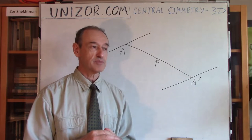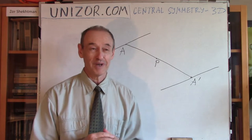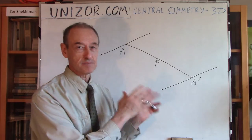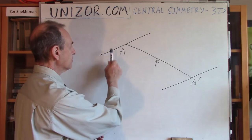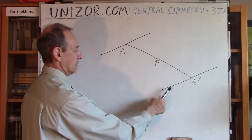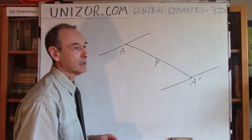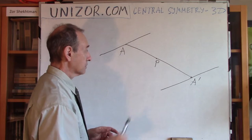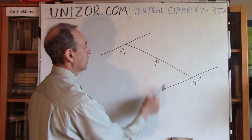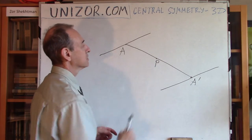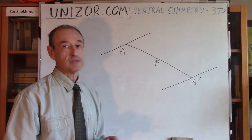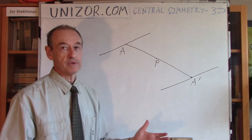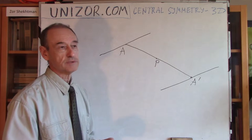Obvious things are sometimes very difficult to prove. So let's prove this particular theorem: the image of a line is a line which is parallel to the original, and also these two lines are equidistant from the center of symmetry P. Which again seems obvious, but still needs to be proven.